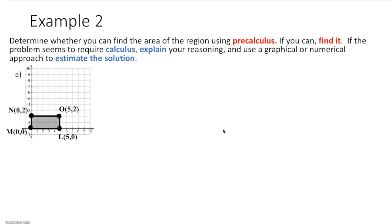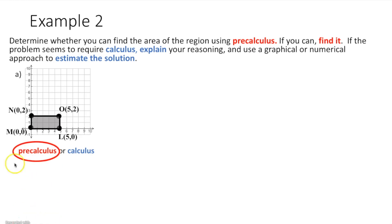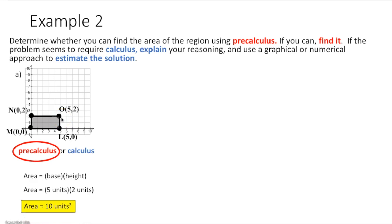Example 2 says: determine whether you can find the area of the region using pre-calculus; if you can, find it; if the problem seems to require calculus, explain your reasoning and estimate the solution. Here we have a rectangle — you can go back to geometry and determine the area using base times height. The base looks like it's 5 and the height looks like it's 2 units, so multiplying gives 10 square units. Remember to include units because we are finding area.